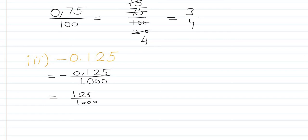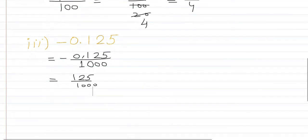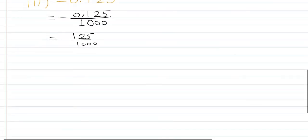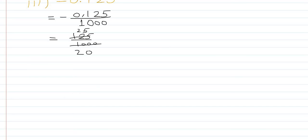Now we simplify minus 125 over 1000. Since 5 appears at the end, we divide by 5: 125 ÷ 5 = 25, 1000 ÷ 5 = 200. Then 25 ÷ 25 = 1, and 200 ÷ 25 = 8. So the lowest form is minus 1 over 8, which is the answer.